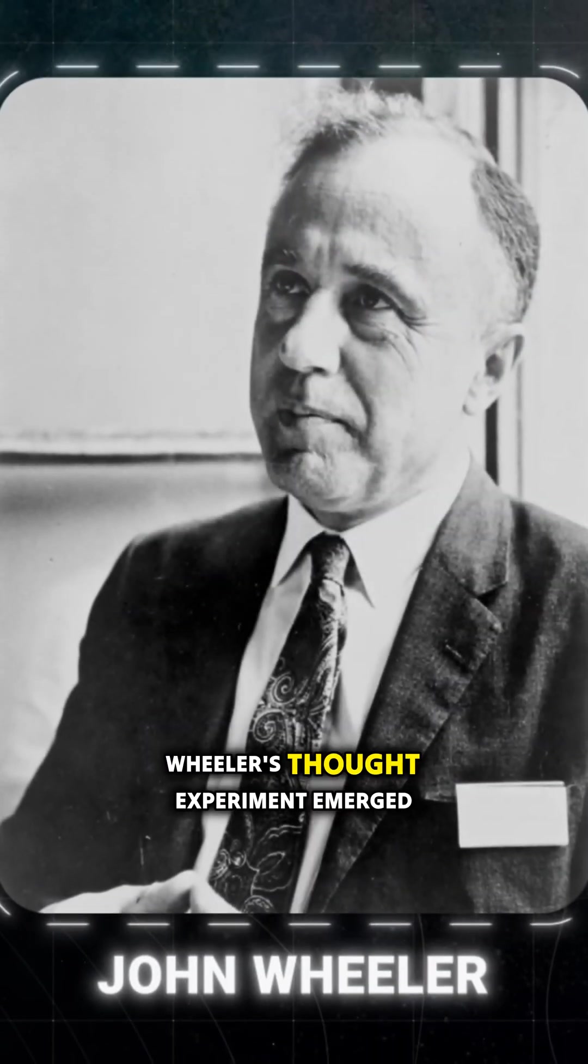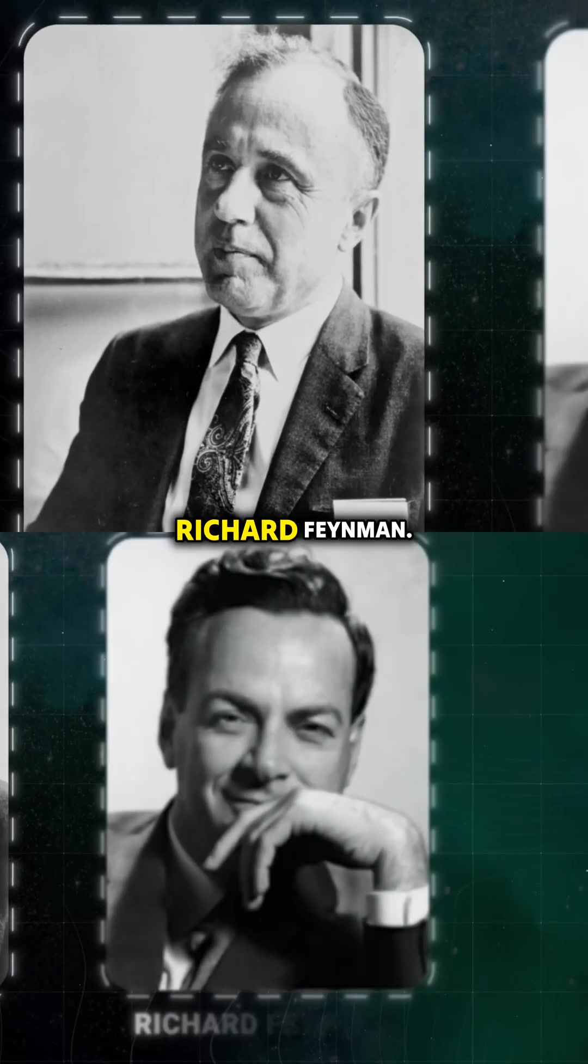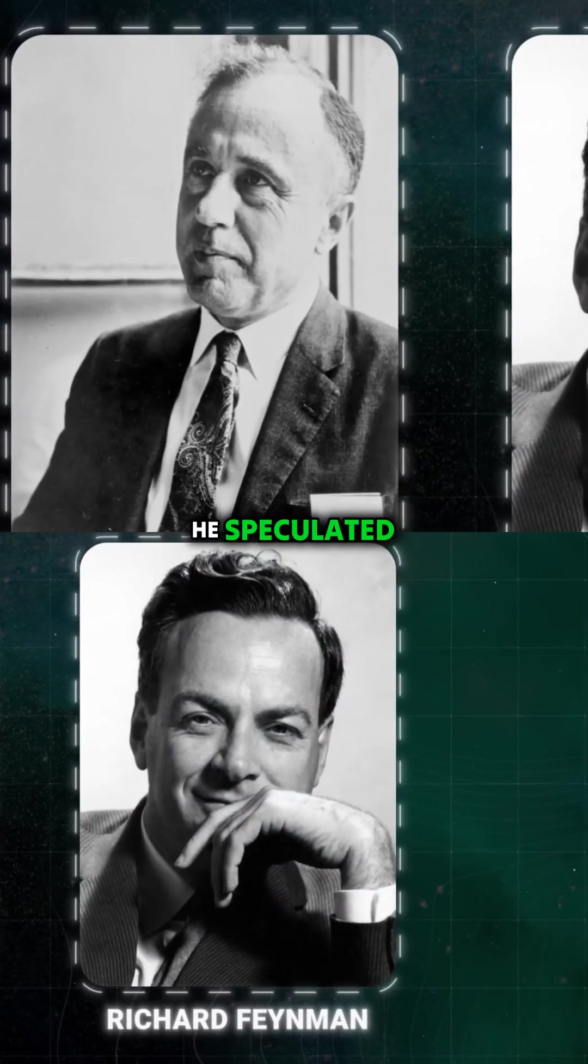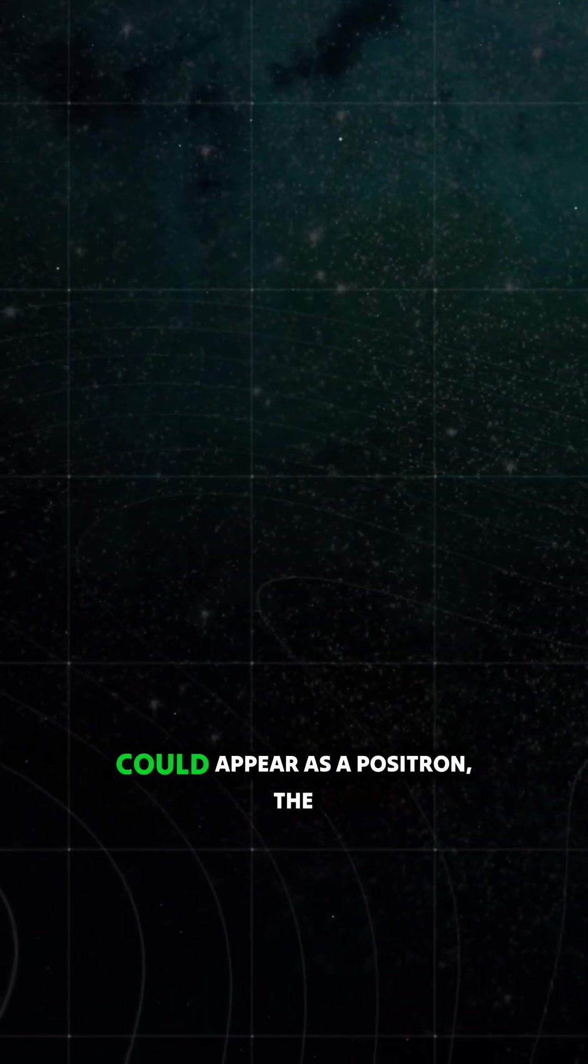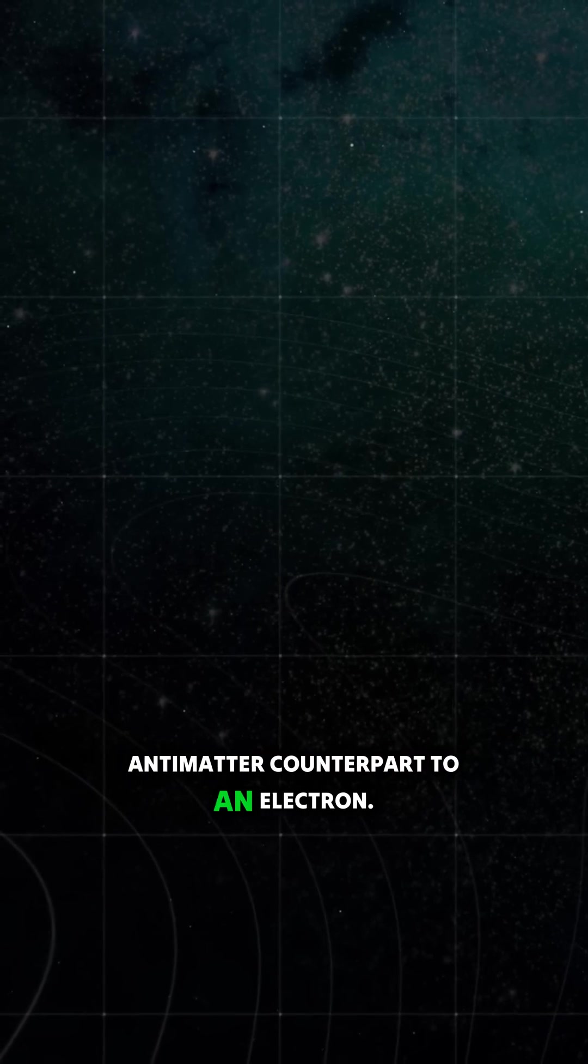Wheeler's thought experiment emerged during a conversation with his colleague Richard Feynman. He speculated that an electron traveling backward in time could appear as a positron, the antimatter counterpart to an electron.